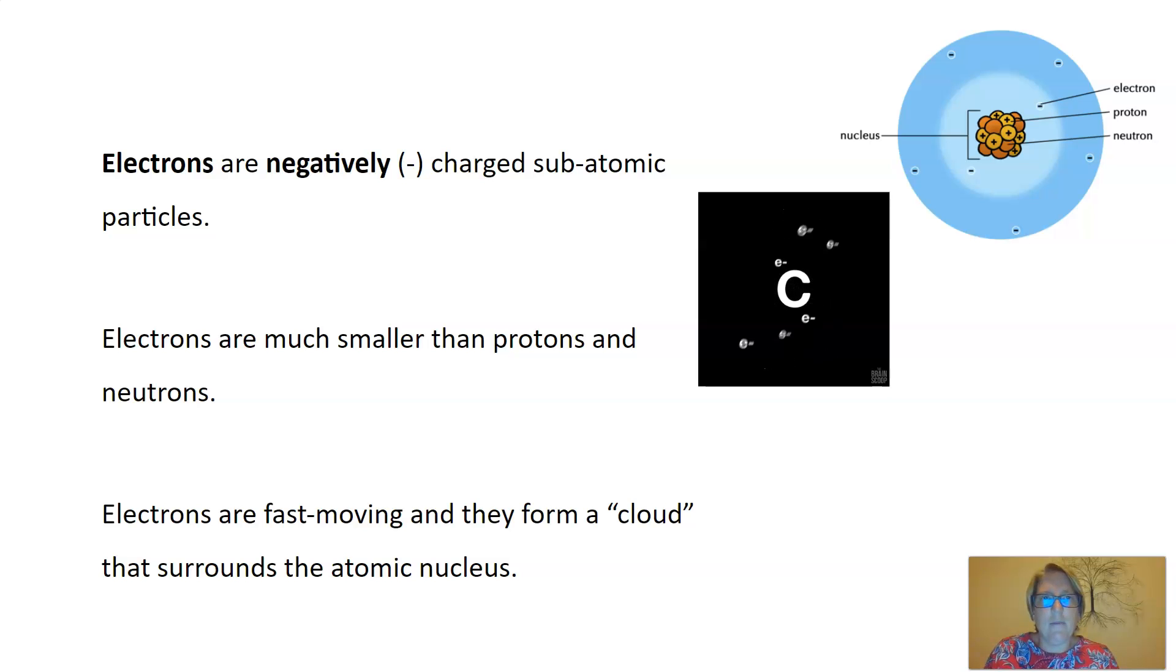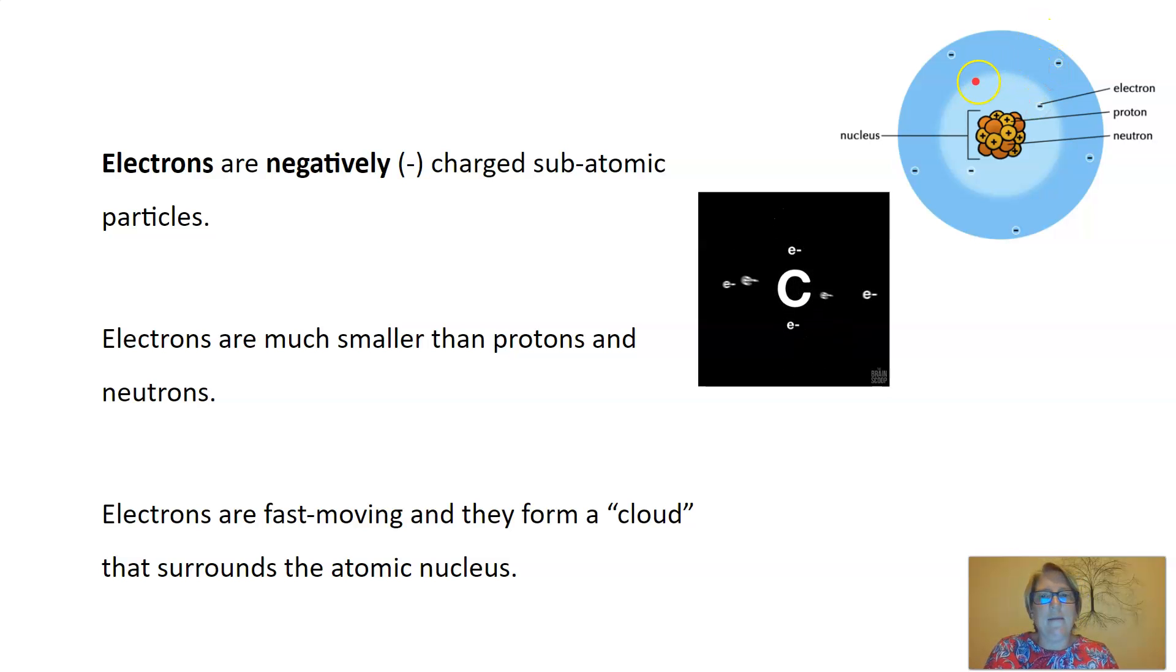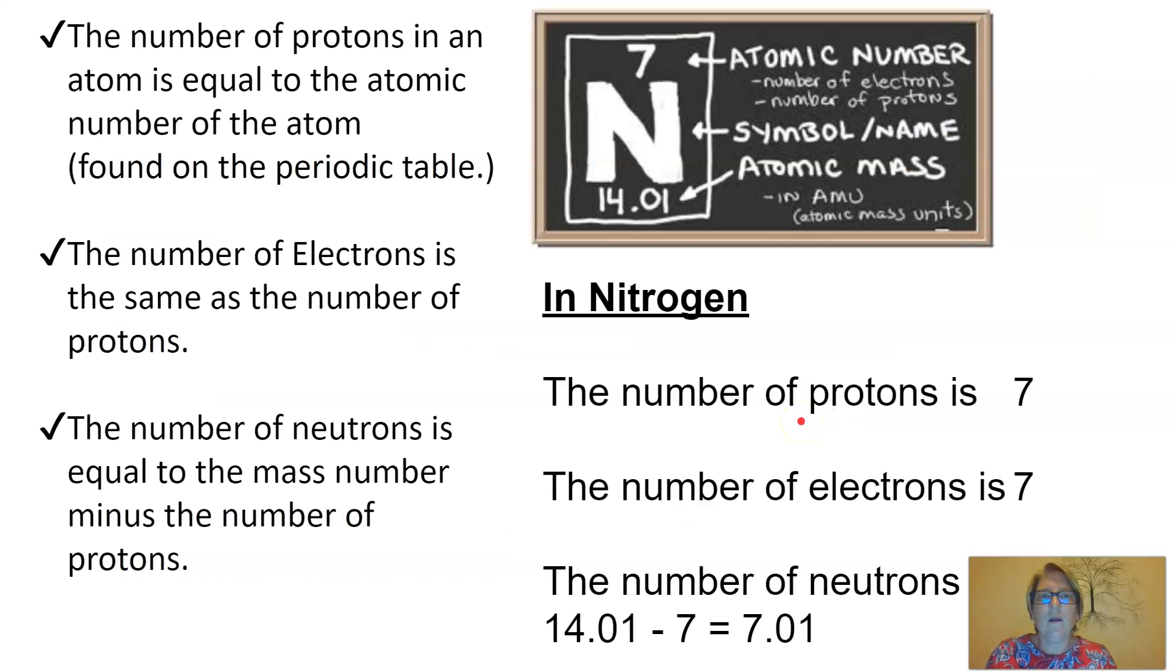Then the last subatomic particle we need to look at is electrons. Electrons are negatively charged. If we have a look here, we find the electrons orbiting around the nucleus. Electrons are much smaller than protons and neutrons. Electrons are very fast moving and they actually create a cloud around the atom. In this example here of carbon, you can see the electrons around the outside are making a cloud.